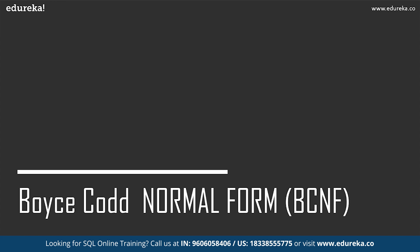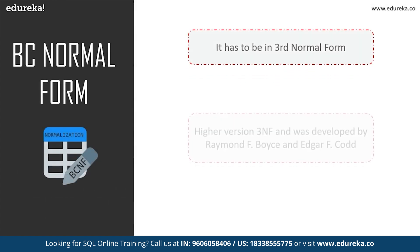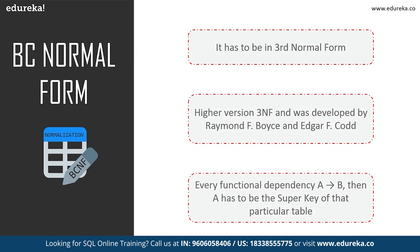Next is Boyce-Codd normal form, also known as 3.5 normal form. It is a higher version of third normal form, developed by Raymond F. Boyce and Edgar F. Codd to address certain anomalies not dealt with by third normal form. The table must satisfy third normal form, and for every functional dependency A implies B, A must be the super key of that table. A super key is a group of single or multiple keys which identifies rows in a table.